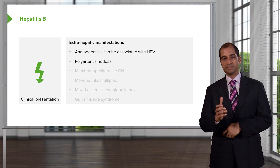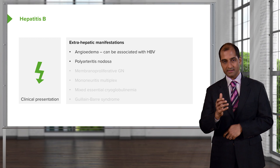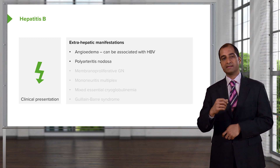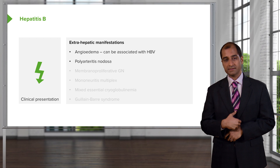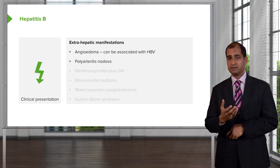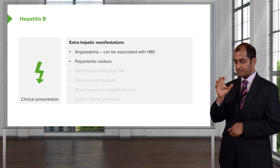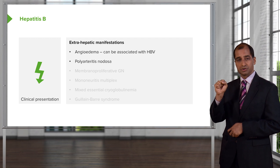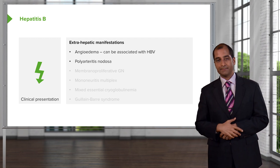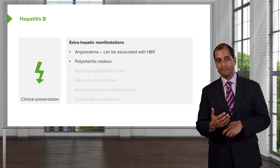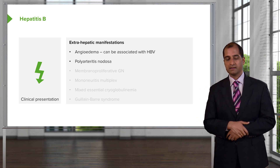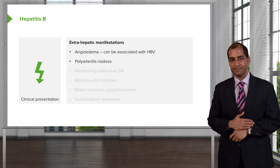Polyarteritis nodosa is a vasculitis. The vascular system affected here is the mesenteric blood vessel. Vasculitis means inflammation of the blood vessel until there's occlusion, lack of blood supply to the abdominal region and mesentery — anytime there's ischemia, the patient feels pain in the abdomen.